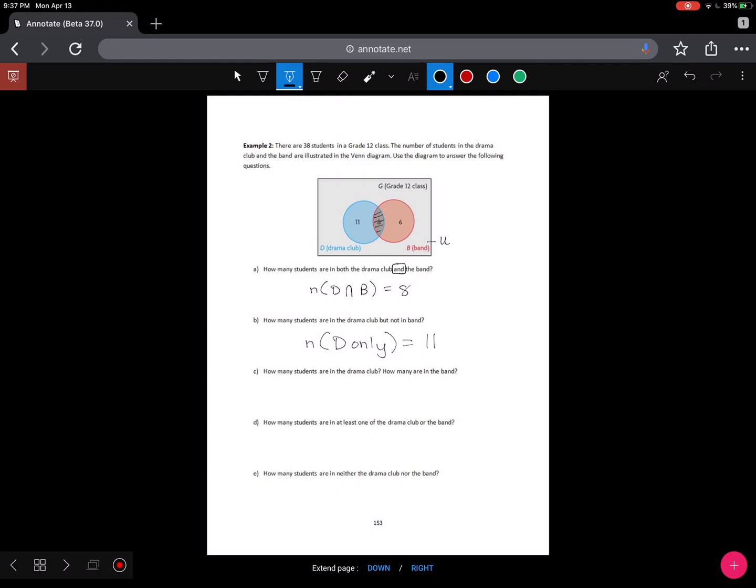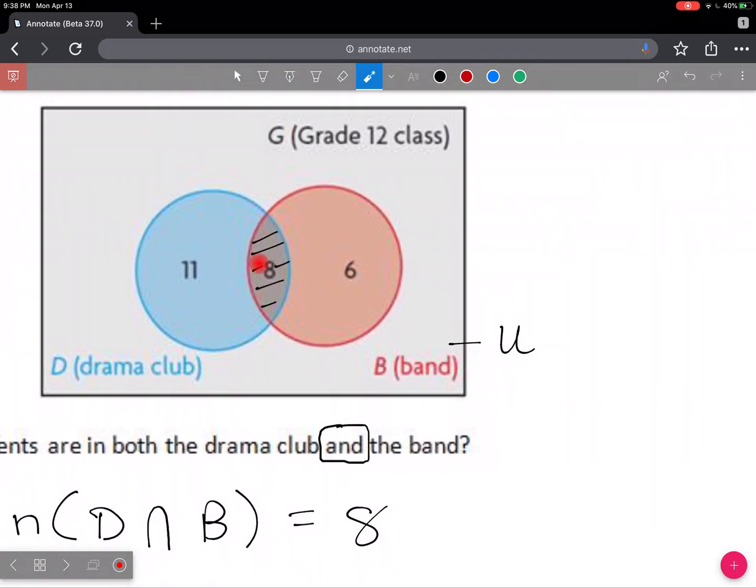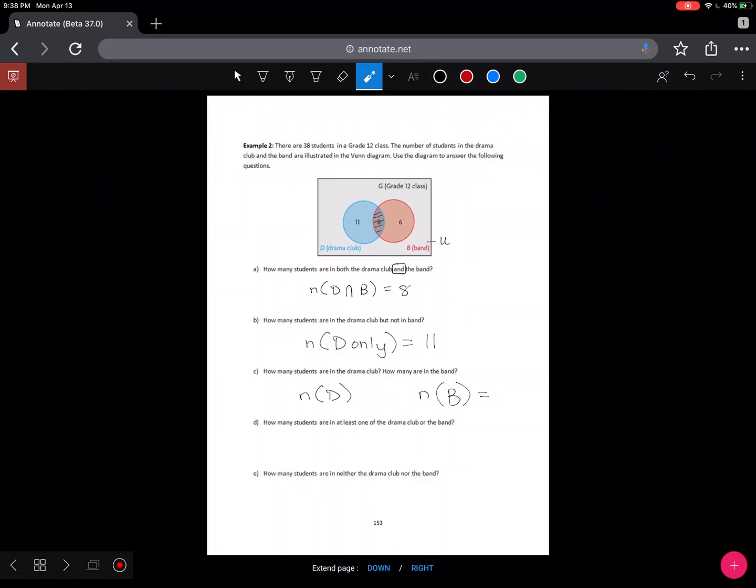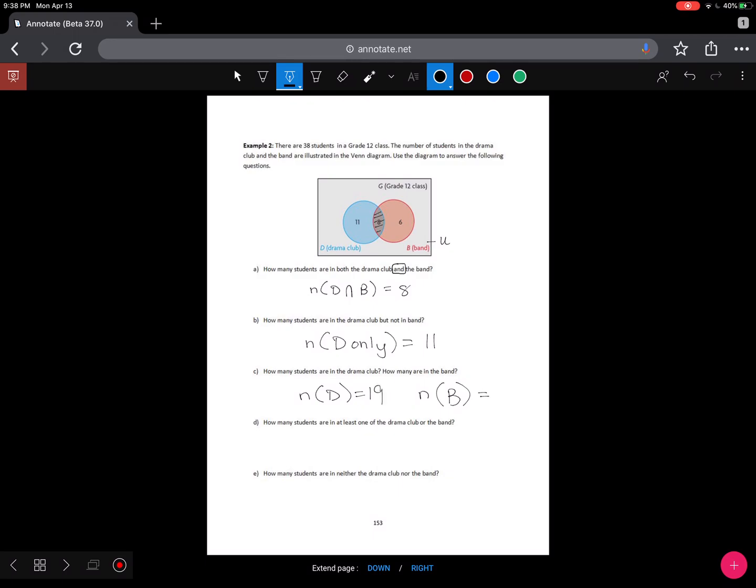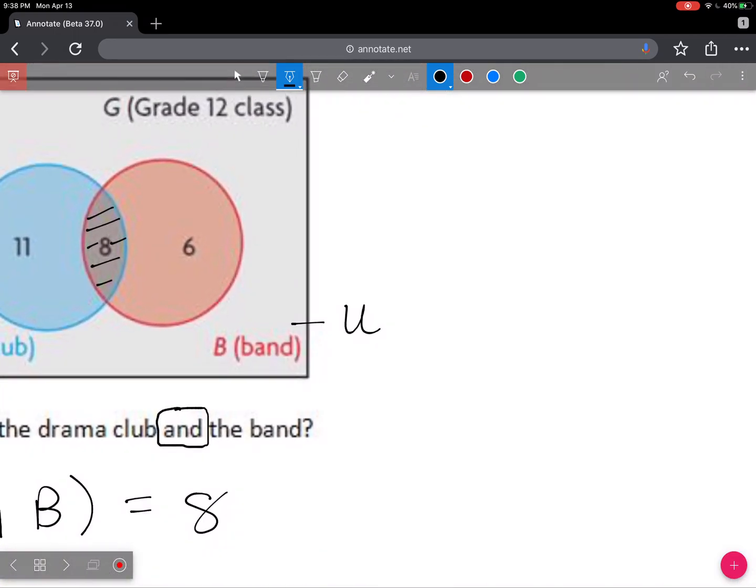How many students are in the drama club? How many are in the band? And so when you're answering this question, you have two separate notations to figure out. You need the number in drama. You need the number in band. And so when we look at the Venn diagram, how many are in the blue circle? Well, 11 are here, 8 are here. So this whole blue circle, there's actually 19 people registered in the drama club. Similarly, the number of people in the band. Well, there's 6 in band only, and there's 8 that are in band that are also in drama. So they have to be included as well. So all together in this red circle, there's 14.